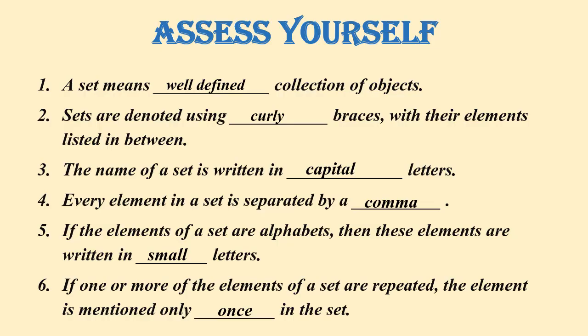Here is a little 'assess yourself' activity to check what you learned during this lecture. First, a set means [well-defined] collection of objects. Second, sets are denoted using [curly] braces with their elements listed in between. Third, the name of a set is written in [capital] letters. Fourth, every element in a set is separated by a comma. Fifth, if the elements of a set are alphabets then these elements are written in [small] letters. Sixth, if one or more of the elements of a set are repeated, the element is mentioned only [once] in the set.